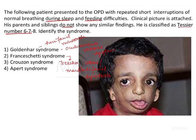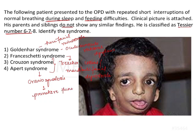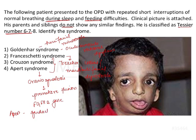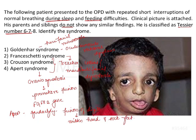The third and fourth options, Crouzon syndrome and Apert syndrome, are both characterized by craniosynostosis — premature fusion of the cranial sutures, either single or multiple. Both syndromes exhibit mutation in the FGFR2 gene. The key differentiating feature is that Apert syndrome shows syndactyly — fusion of digits — typically the second, third, and fourth fingers, giving an appearance known as mitten hand and sock feet.